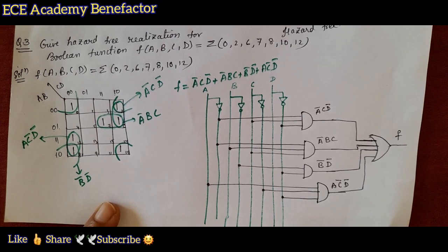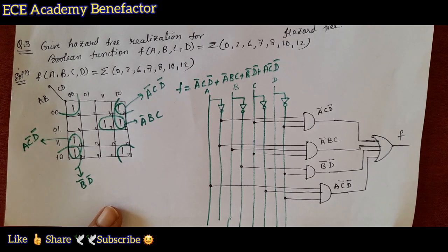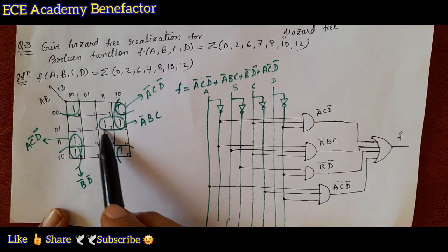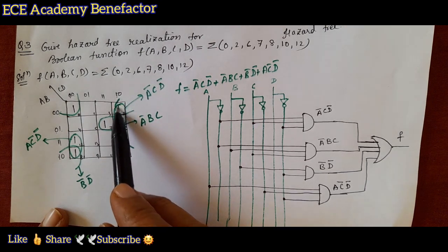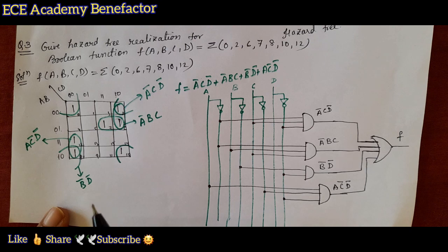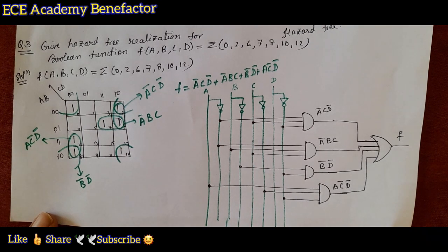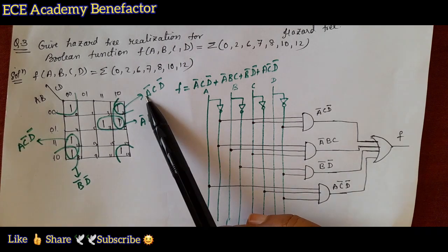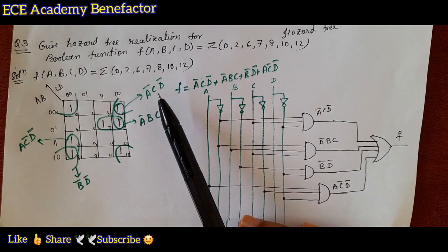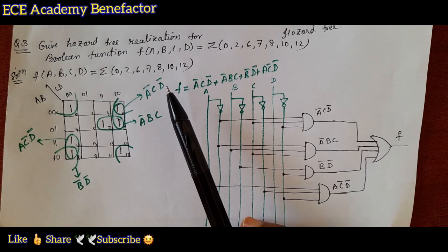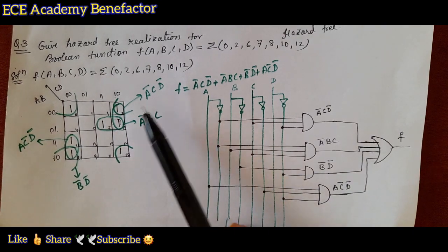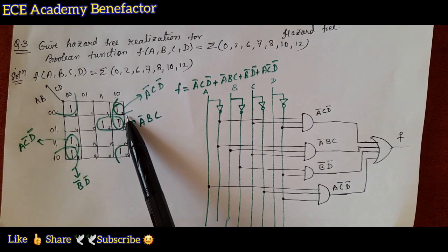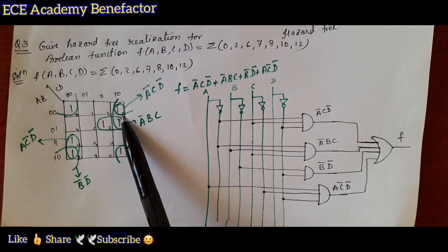This is the hazard-free realization of the given Boolean function. We made one quad, then two pairs, and then one overlapping pair to make it hazard-free. The additional product term ācd̄ was added by overlapping two groups for hazard-free realization. The overlapping groups are already covered, so no additional grouping is needed.